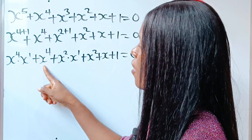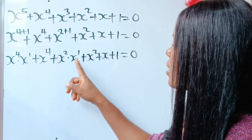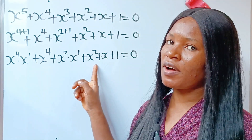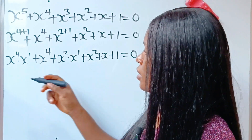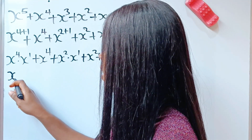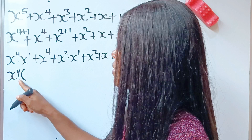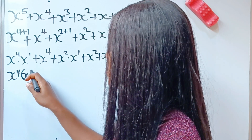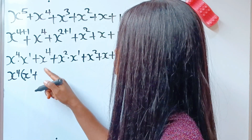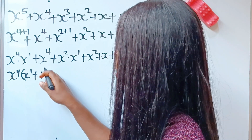Since we have x to the power of 4, x to the power of 4, and x squared, x squared, we can factorize. So, if we do that, we have x to the power of 4 in brackets. When this is divided by this, x to the power of 1 remains. Plus, when this is divided by this, we have 1.